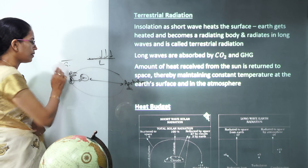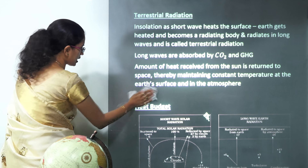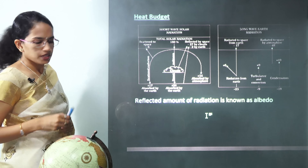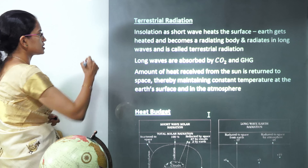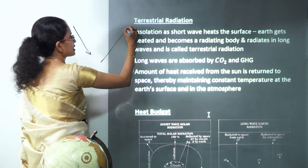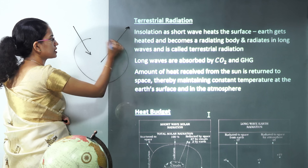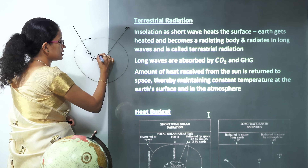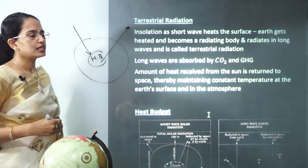When sun rays come in, they are actually in the form of short waves. Short waves come in and ultimately long waves go out. The difference in this energy is trapped, and that is known as terrestrial radiation, which we will understand as part of the heat budget.